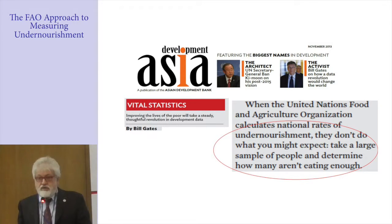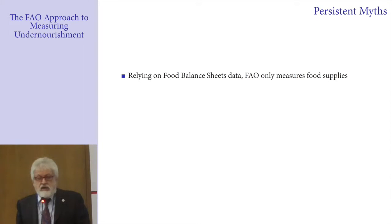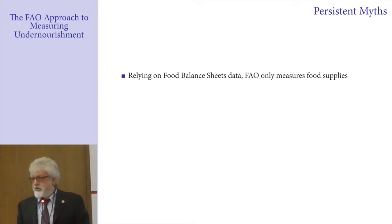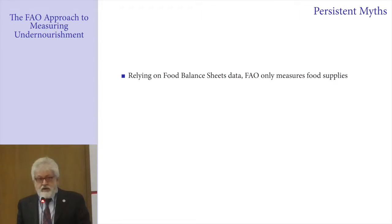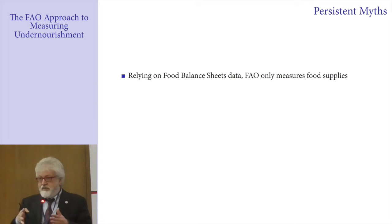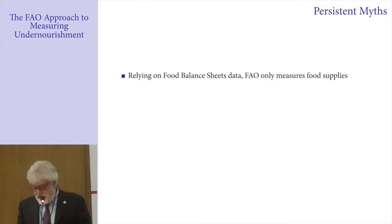I would start by listing reliable, persistent myths about the FAO approach to measuring undernourishment. The first myth is that because FAO relies on food balance sheets, it only measures food supply, and by analyzing food supply you miss how food is distributed in a population — and therefore the hunger numbers are imperfect.